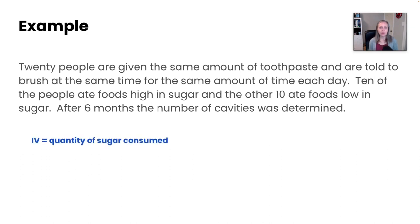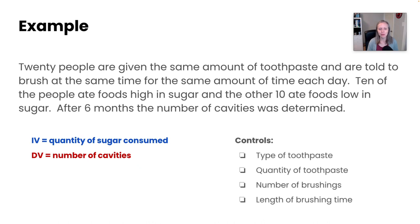Well, let's go through this. The independent variable would be the quantity of sugar consumed. You could quantify this in grams if you would like. The dependent variable would be the number of cavities. So this is just simply measured in a number of cavities, and there's not really units that go with that specifically. And then there's a variety of things you would want to control for. Here are a few I came up with: the type of toothpaste, the quantity of the toothpaste, the number of brushings, and the length of brushing time. And I'm sure you came up with a few others as well on your own.